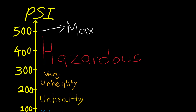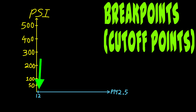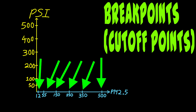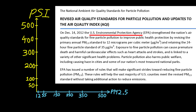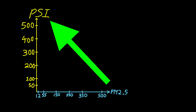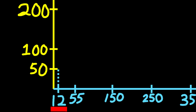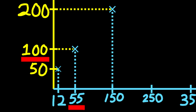For each air pollutant, the NEA similarly designates 6 breakpoints, or cut-off points. For example, for PM2.5, the cut-off points are 12 micrograms per cubic meter, 55, 150, 250, 350, and 500. These seemingly random numbers are taken from the standards used by the U.S. Environmental Protection Agency. The conversion of PM2.5 onto the PSI scale is done so that the PM2.5 cut-off points match up precisely with the PSI cut-off points. In other words, a PM2.5 measurement of 12 micrograms per cubic meter gets converted to a PSI of 50, and a PM2.5 measurement of 55 micrograms per cubic meter gets converted to a PSI of 100, and so on.